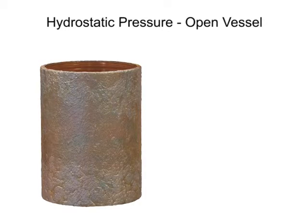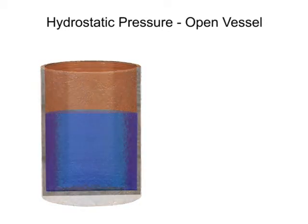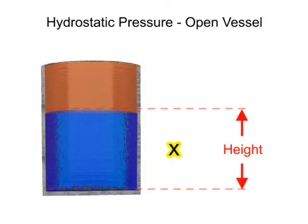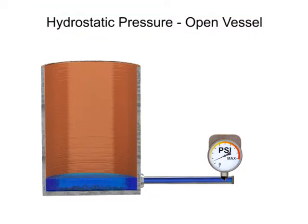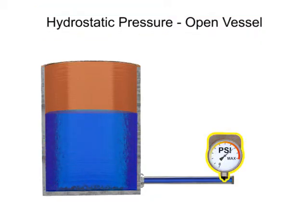The pressure exerted by a fluid material in a vessel is directly proportional to its height multiplied by its density. Hydrostatic pressure, or head pressure, is the force produced by a column of material. As the height of the material changes, there is a proportional change in pressure.